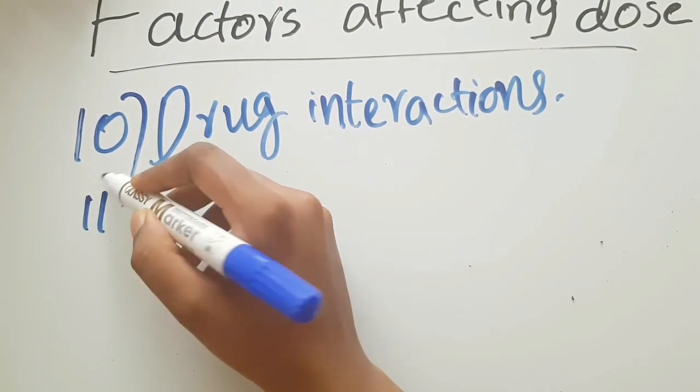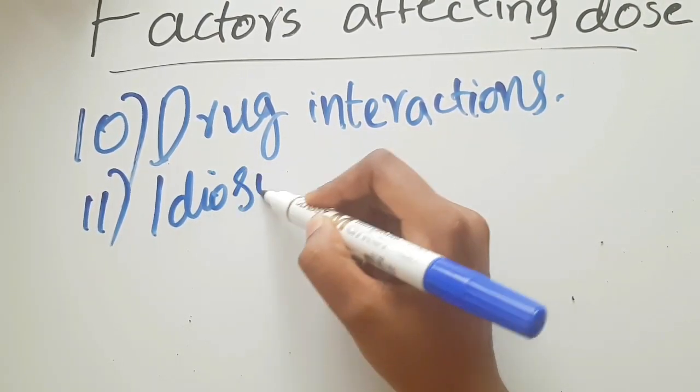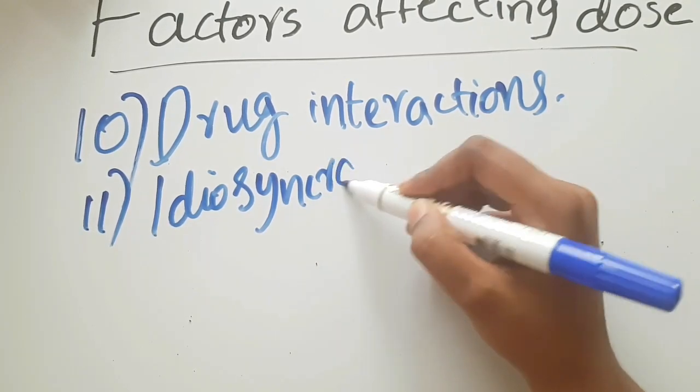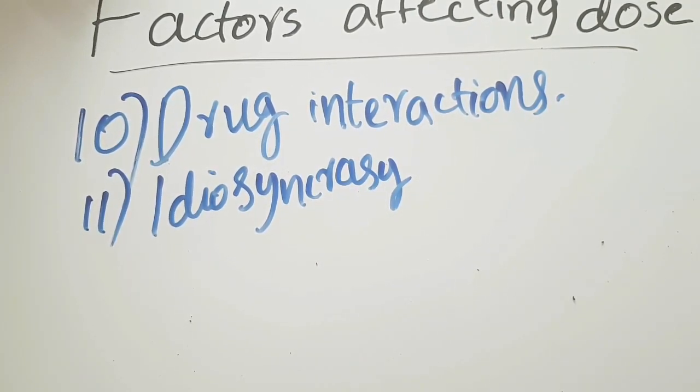Eleventh: idiosyncrasy. This is an exceptional response to a drug in a few individuals. For example, in some patients, aspirin may cause asthma. Penicillin can cause irritating rashes on skin. With idiosyncrasy, we are not expecting some results or side effects or unwanted effects to arise - we don't know the reason. That is another factor which affects the dose of a drug.